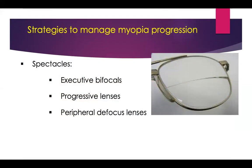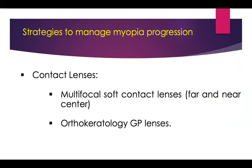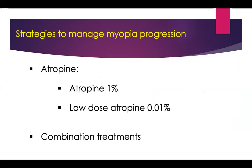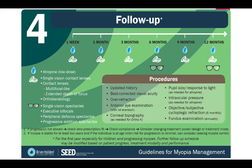To manage myopia progression with spectacles, we have progressive addition lenses, bifocals, and peripheral defocus spectacles. With contact lenses we have multifocal soft lenses and orthokeratology, which are gas permeable lenses. For atropine, 1% does work but we don't recommend it because of side effects. Low dose atropine is what we use and recommend for myopia management, in various concentrations. This talk is not focused on atropine, but we will cover it in another webinar. Combination of treatments is also an option.